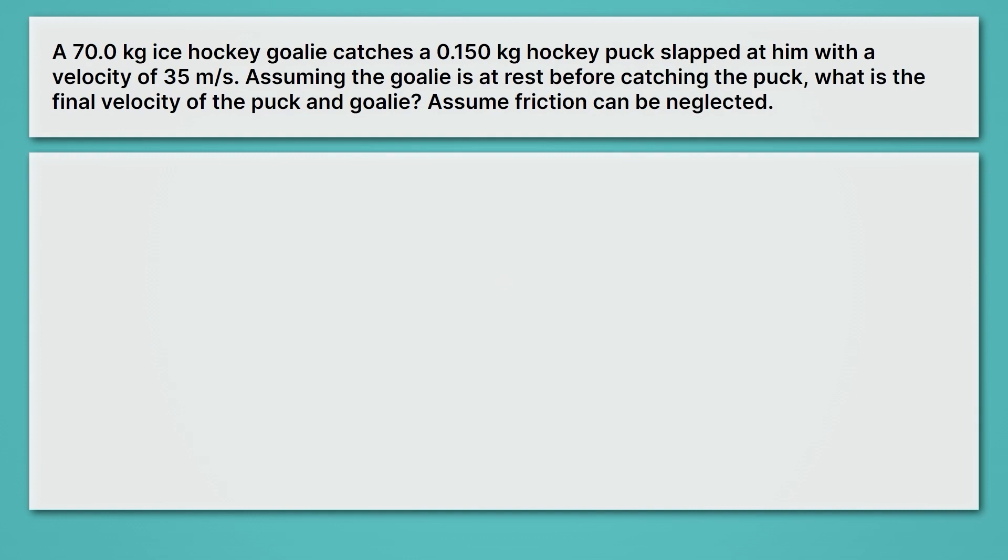Let's solve one more problem here with an inelastic collision. This problem says that a 70 kilogram ice hockey goalie catches a 0.150 kilogram hockey puck slapped at him with a velocity of 35 meters per second. Assuming the goalie is at rest before catching the puck, what is the final velocity of the puck and goalie? Assume friction can be neglected. Before we start working on this problem, let's draw a picture. First, we'll start with what it looks like before the collision actually occurs. Before, we have a hockey puck traveling forward with some velocity, and then we have a goalie who's going to catch it.